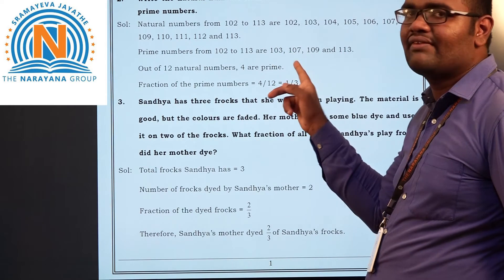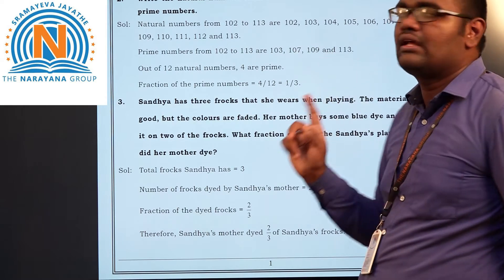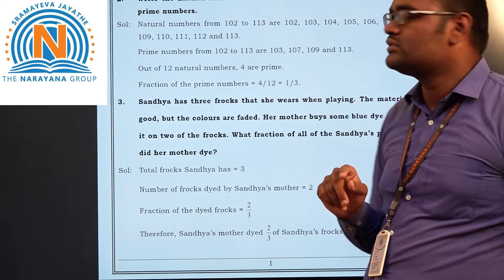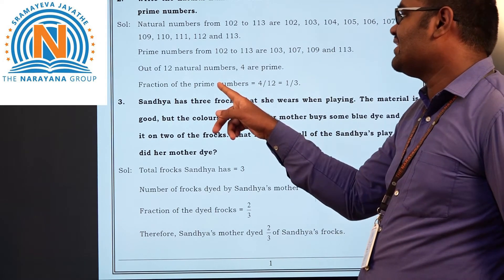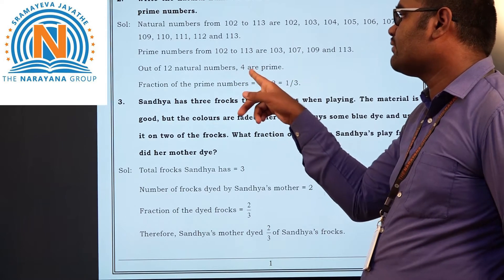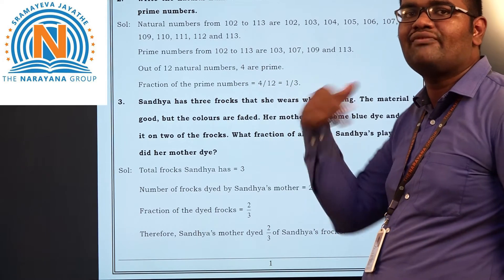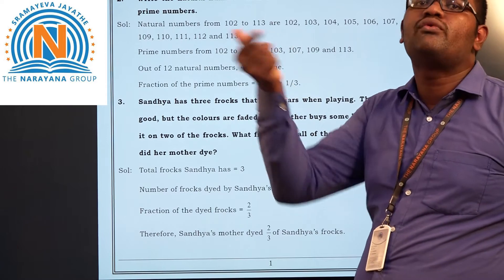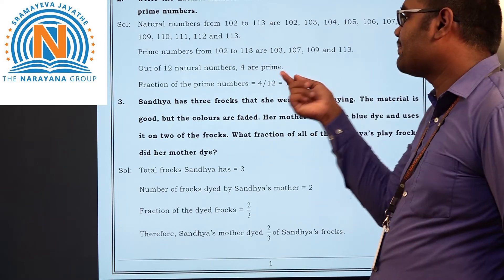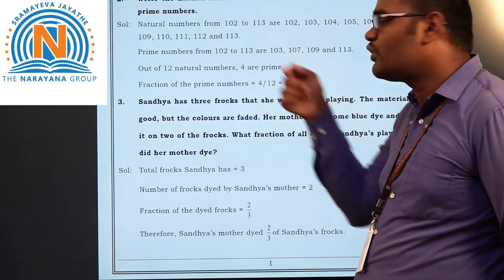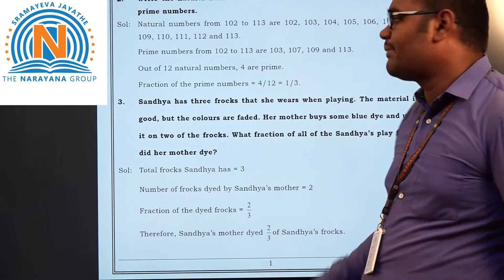103 is prime number, 107, 109 and 113. How to find prime numbers? You have to find that out. Out of these 12 numbers, 4 numbers are prime numbers. So what fraction are prime numbers? 4 by 12. 4 are prime, overall total number is 12. So 4 by 12 is equal to 1 by 3.